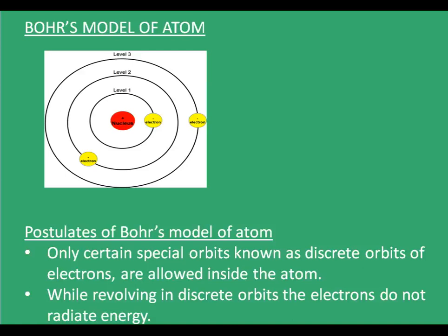Bohr's model of atom had some postulates. The first was that only certain special orbits, known as discrete orbits of electrons, are allowed inside the atom. While revolving in discrete orbits, the electrons do not radiate energy, and hence they won't fall into the nucleus making matter unstable. This is typically how a Bohr's model of atom looks — it has the nucleus, which is positively charged, and it has electrons surrounding it, revolving around it in specific orbits. These electrons do not radiate energy.